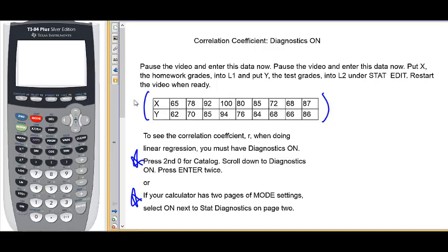Okay. To see the correlation coefficient r when doing linear regression, you must have diagnostics turned on. Press second function and then above the zero key where it says catalog.